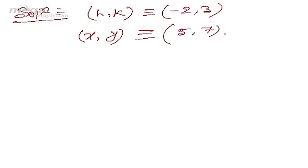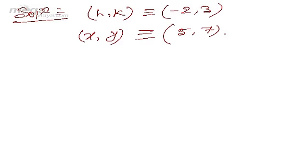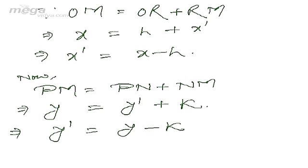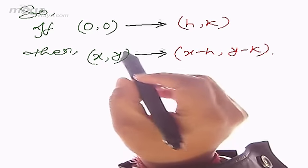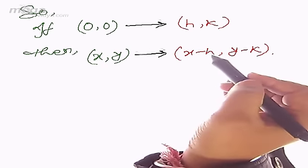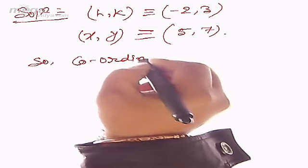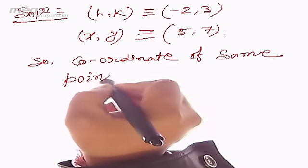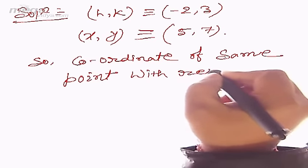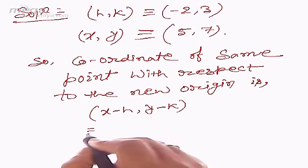We need to find the coordinates of the same point when the origin is shifted to (-2, 3). Using the formula: when (0,0) shifts to (h, k), the new coordinates become (x - h, y - k). So the coordinates of the same point with respect to the new origin are given by (x - h, y - k).